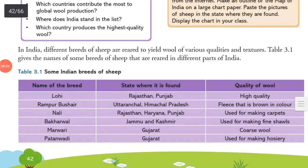In India, different breeds of sheep are reared to yield wool of various qualities and textures, in different parts of India. Lohi breed from Rajasthan and Punjab gives high quality wool.